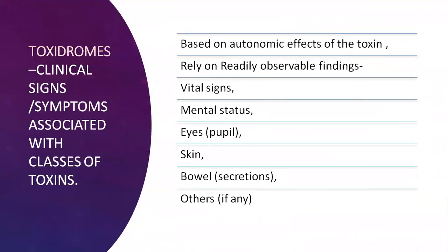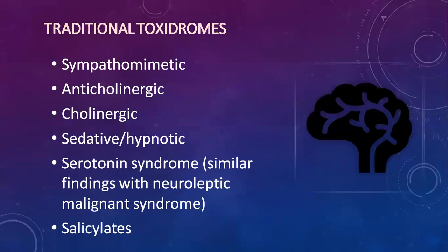What are toxidromes? These are the clinical signs or symptoms associated with classes of toxins. They are based on the autonomic effects of the toxin and rely completely on readily observable findings such as vital signs, mental status, eye and pupil changes, skin, bowel secretions, and others if present. The traditional toxidromes are: sympathomimetic, anti-cholinergic, cholinergic, sedative-hypnotic, serotonin syndrome — which has similar findings with neuroleptic malignant syndrome — salicylates, and opioids.